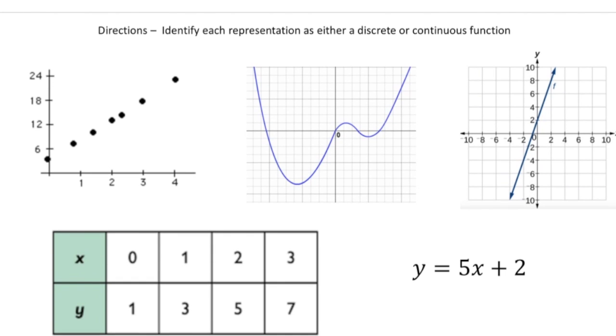Let's try to identify if the function is discrete or continuous. So take a look at the first one right here. Notice these points are separated, right? There's gaps. Anytime you see gaps, you know this is going to be a discrete function.